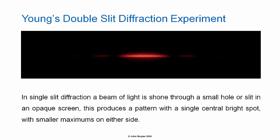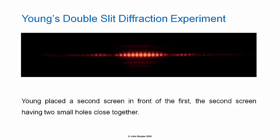In single slit diffraction, the beam of light is shone through a small hole or slit in an opaque screen. This produces a pattern with a single central bright spot, with smaller maximums on either side. And you can see above, there is an image of a single slit diffraction pattern. And you have a single central bright spot, and two smaller bright spots on either side, which can be difficult to see.